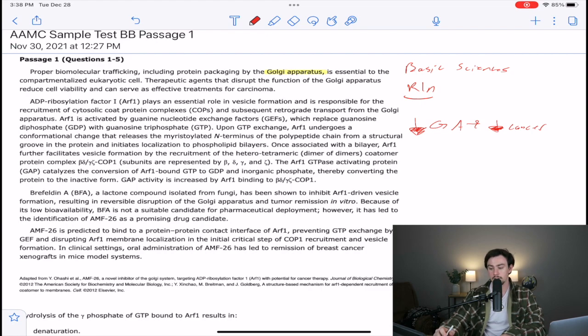Goes on to say ADP-ribosylation factor, or ARF1, plays an essential role in vesicle formation, is responsible for the recruitment of cytosolic protein coat complexes, and subsequent retrograde transport from the Golgi. That should sound like word soup to you. You're not supposed to know what ARF1 is. You're not supposed to know what COPs are. You're not supposed to know. I don't even remember learning about retrograde transport, but because of the basic sciences within these terms, we can definitely figure out their relationships.